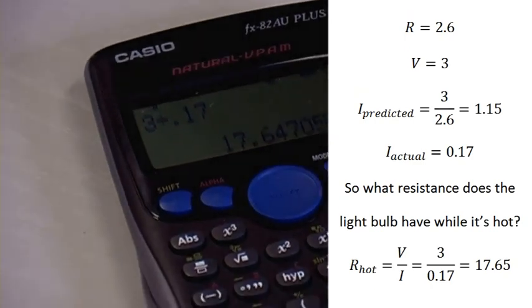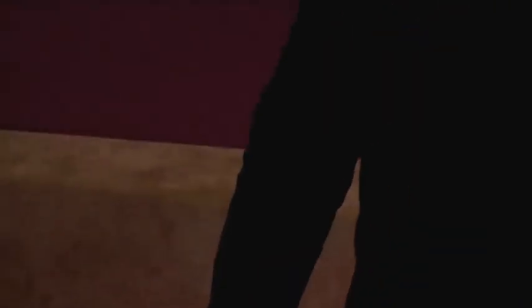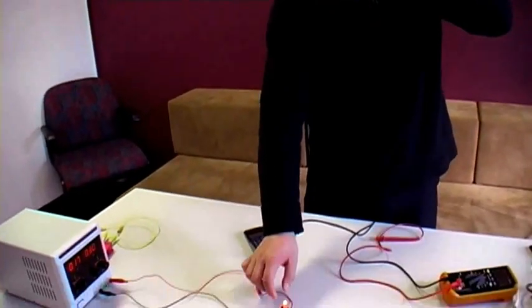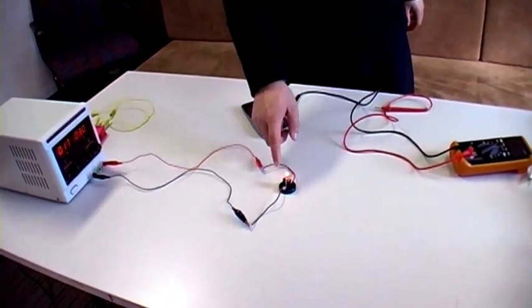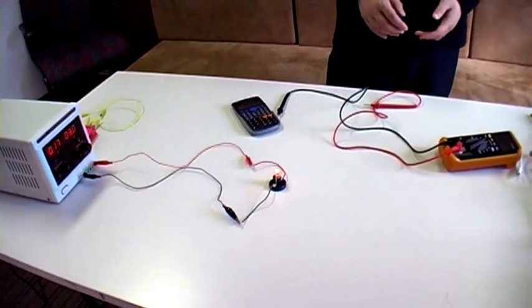We measured 2.6 Ohms. So what that indicates is just only by pushing 3 volts into the light bulb, the resistance of the filament has jumped to 17.64 Ohms. And the reason for this is clear. If you look at the light bulb, it's actually glowing orange white hot already. Even at 3 volts, the temperature on this is probably 2,000 degrees.